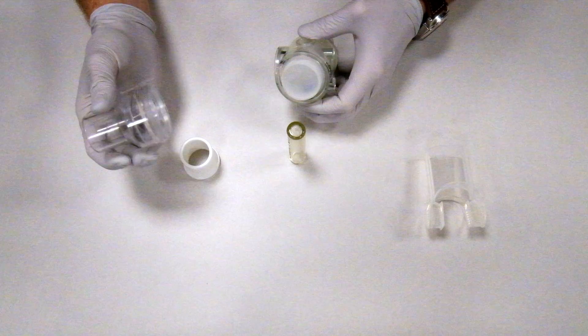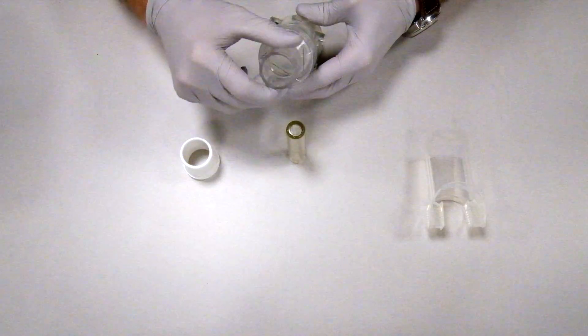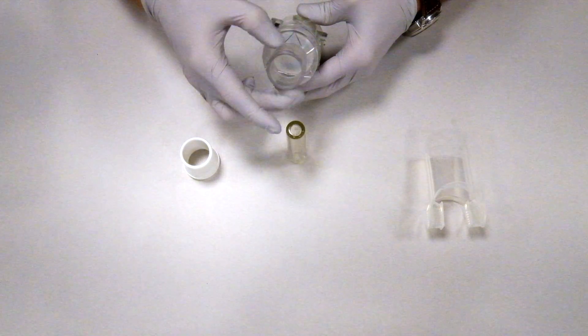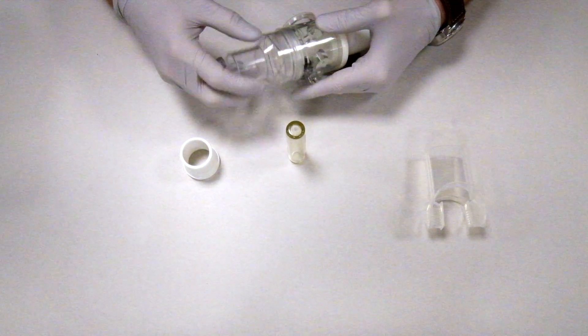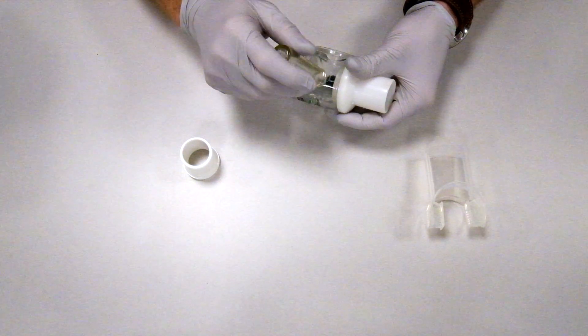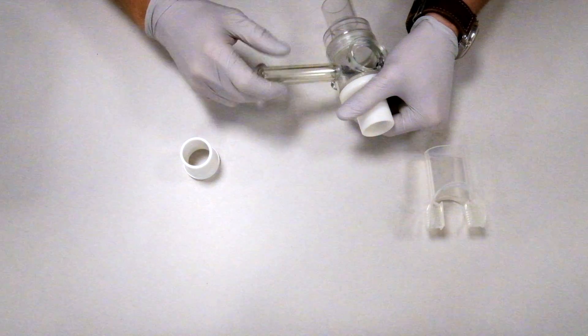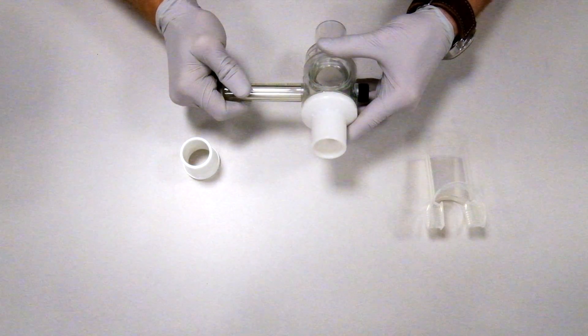You can then take the mouthpiece, place in the valve, and screw on the adapter tube. Now that you have those on, you can attach the saliva trap into the small opening and screw it on tight.